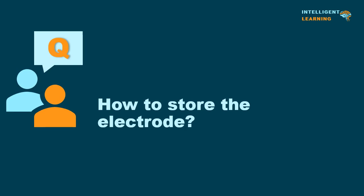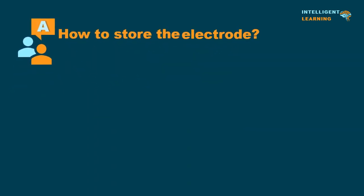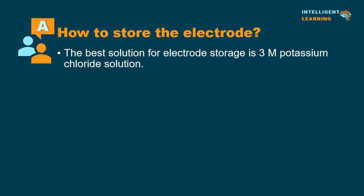How to store the electrode? The best solution for electrode storage is 3 molar potassium chloride solution.